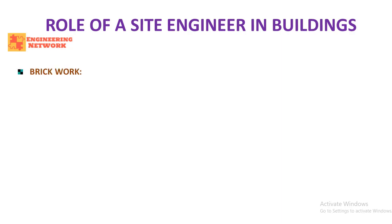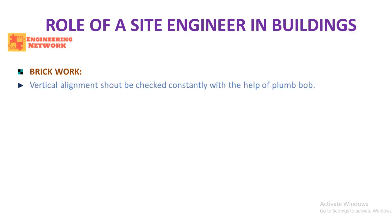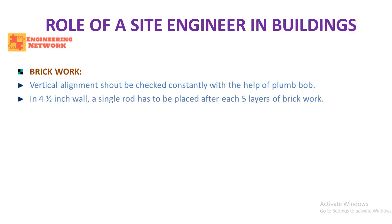Brickwork is very common in building construction projects, and as a civil engineer you must know about it. The first point in brickwork is the alignment of bricks — the vertical alignment must be constantly checked while laying bricks using a plumb bob. If you are constructing a nine-inch wall, there is no need to provide steel rods. However, if the wall thickness is 4.5 inches, a steel rod must be placed after every five layers of bricks.